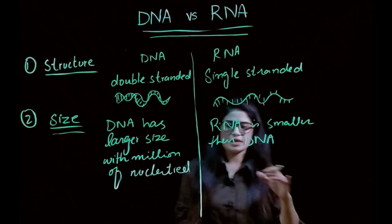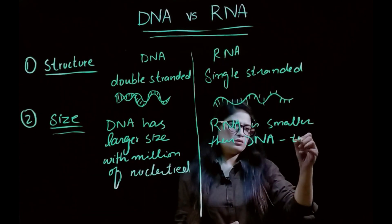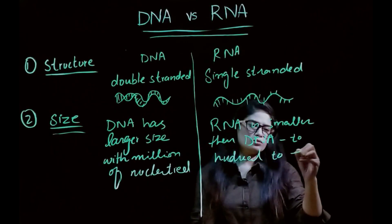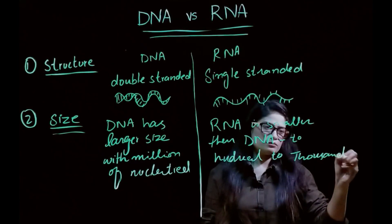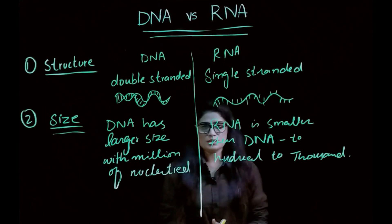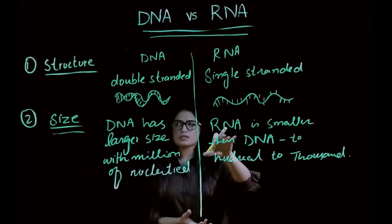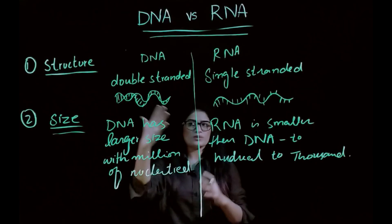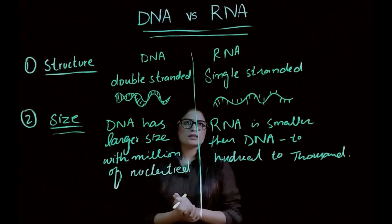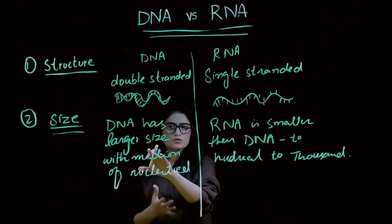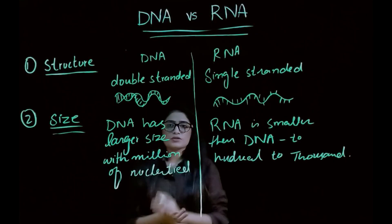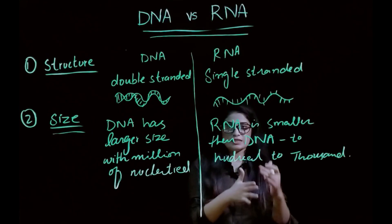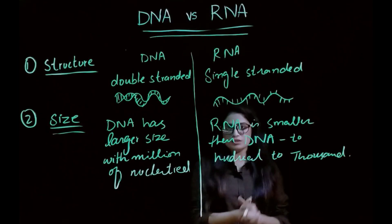RNA has most of the time hundreds of thousands, and sometimes tens of thousands of nucleotides. So DNA has a much larger size compared to RNA with millions of nucleotides, while RNA is smaller with hundreds to thousands of nucleotides.